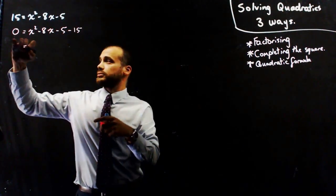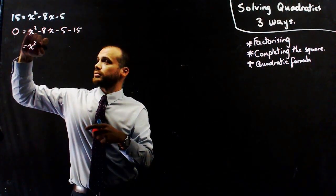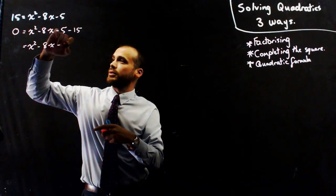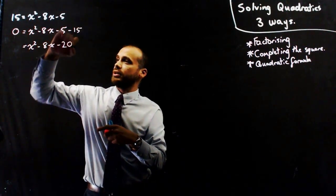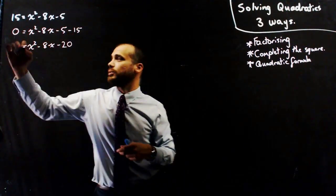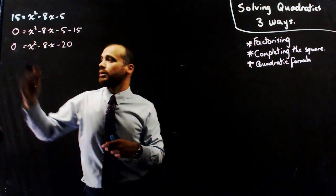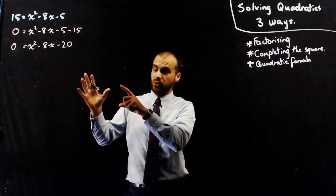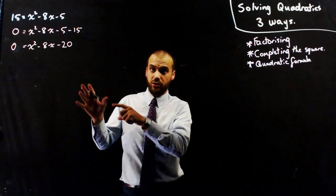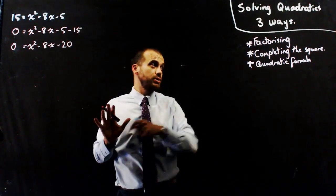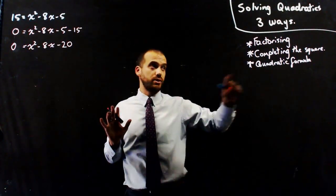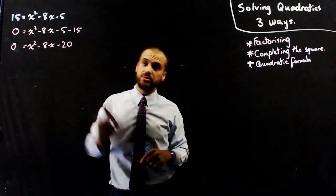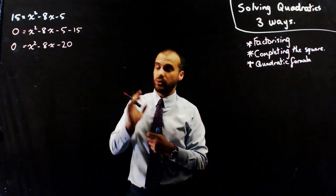Tidying that up, negative 5 minus 15 is negative 20. So now I have a quadratic in a form that I can solve. It doesn't matter whether you're completing the square, using the quadratic formula, or factorising — making it equal to 0 is going to be your first step, always.